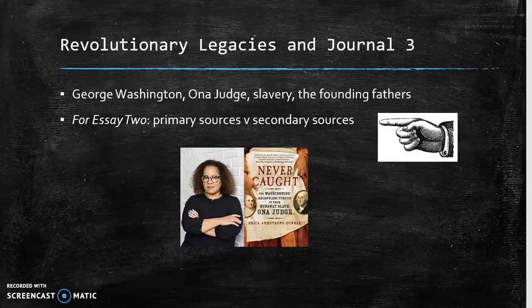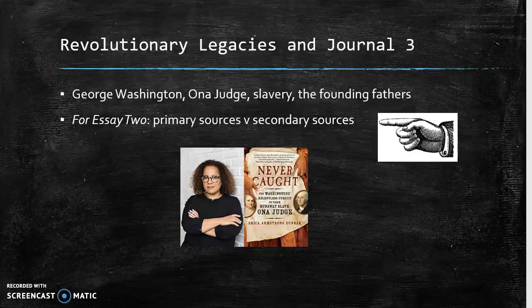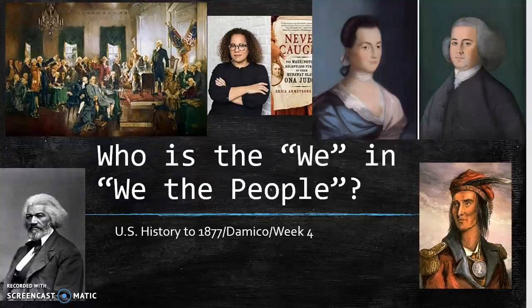The three-fifths compromise said that slavery was legal and part of the Constitution, and that slaves counted as three-fifths of a person for the purpose of establishing a state's population. In week three's journal, you read about George Washington and Ona Judge, a slave who belonged to Martha Washington — continuing to grapple with how we reconcile the Founding Fathers' demands for liberty with the fact that many of them were, at the very same time, withholding liberty from people. That brings us to our theme: who is the 'we' in 'We the People'?